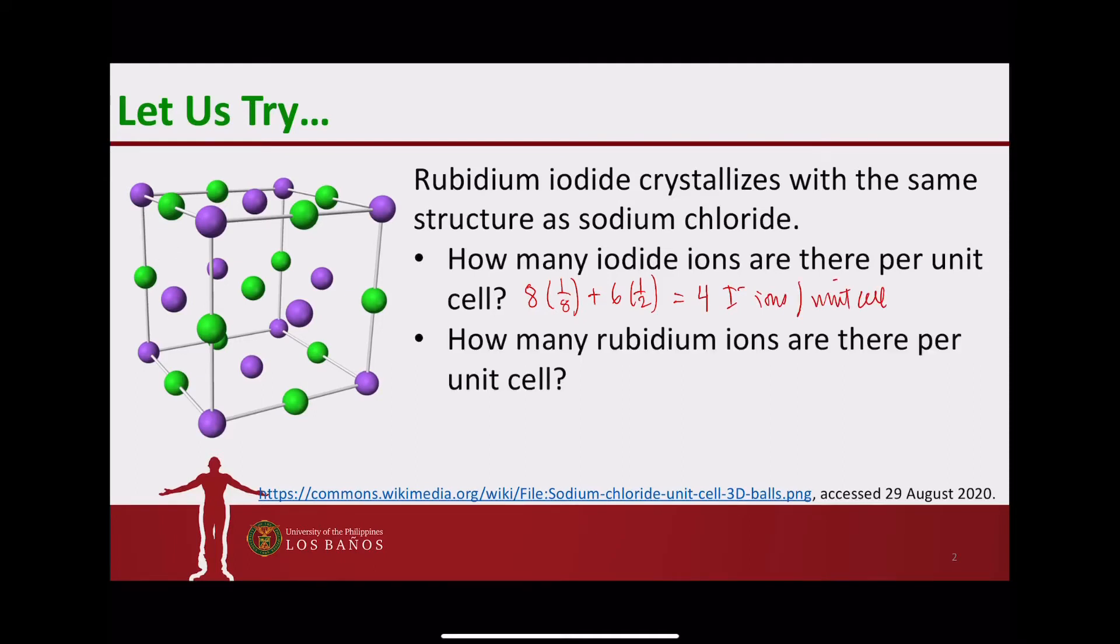For the rubidium ions, one in the body and the one in the body is actually not being shared to another unit cell, so the whole of it will be accounted for this unit cell. And then we have all the edges. The edges would account only one-fourth for this unit cell. So we also have four rubidium ions per unit cell.